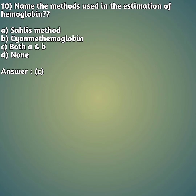Tenth question: name the methods used in the estimation of hemoglobin by manual methods. Option A: Sahli's method. Option B: cyanomethemoglobin method. Option C: both A and B. Option D: none. The right answer is option C — both A and B, Sahli's method and cyanomethemoglobin method.